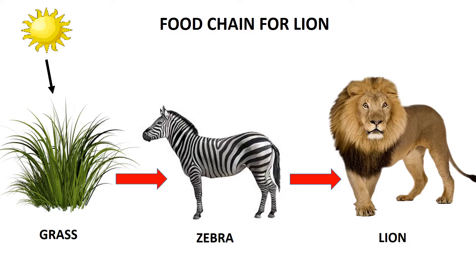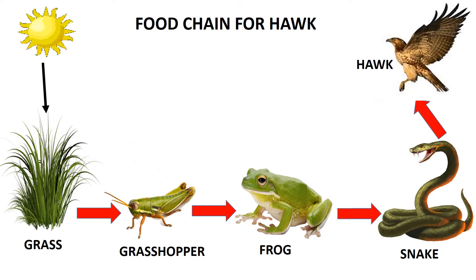The food chain for a lion is: the grass depends on the soil, water, and the sun for energy; the zebra eats the grass for energy; the lion eats the zebra for energy. Here is another example.